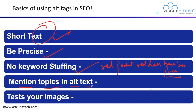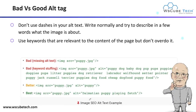Next, mention the topic in the alt text. You should mention the keyword in your alt text because Google is very smart — alt text helps Google determine the topic of the page. Next, test your image. Check whether you have written the alt text correctly for the particular image and whether your image is showing the alt text correctly. These are the some basics of alt text.